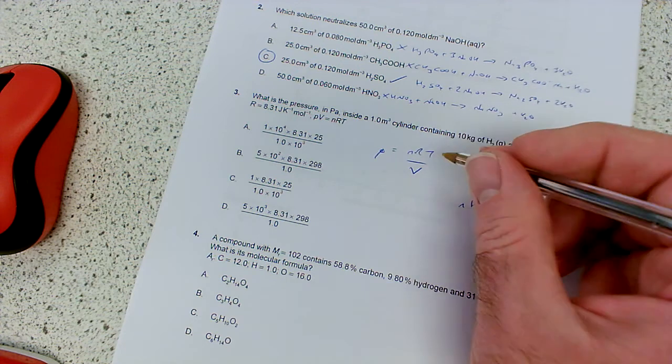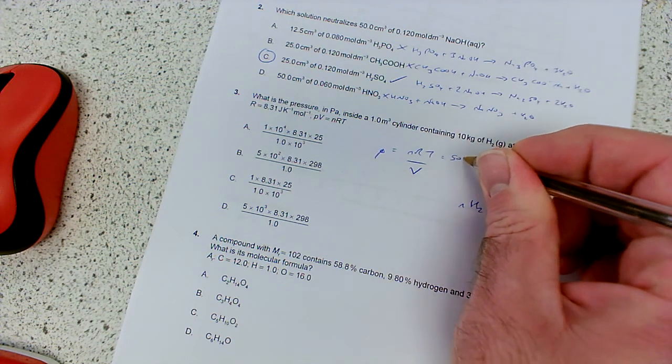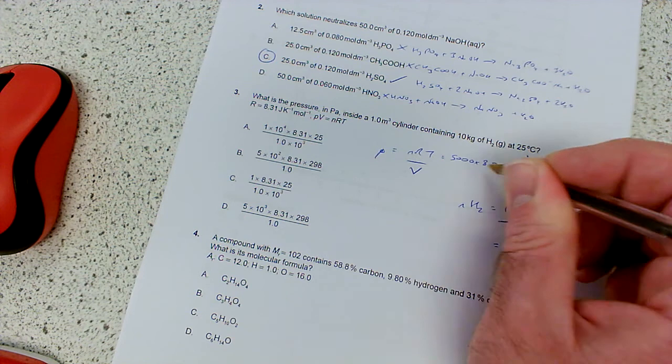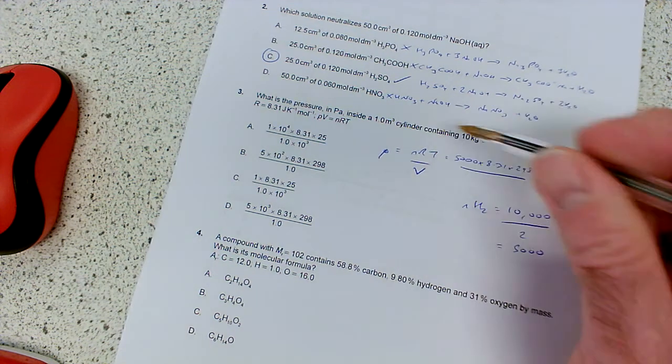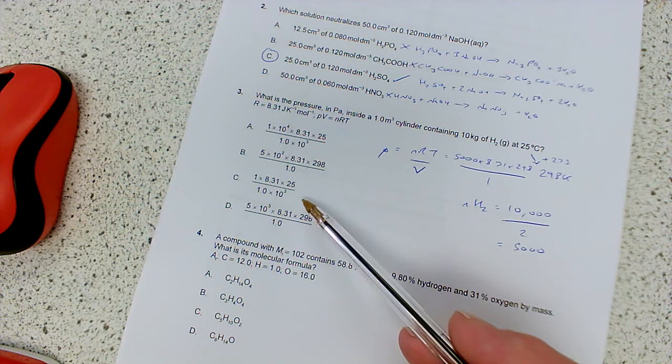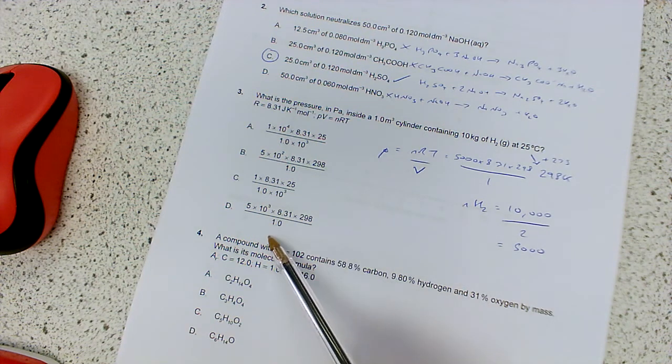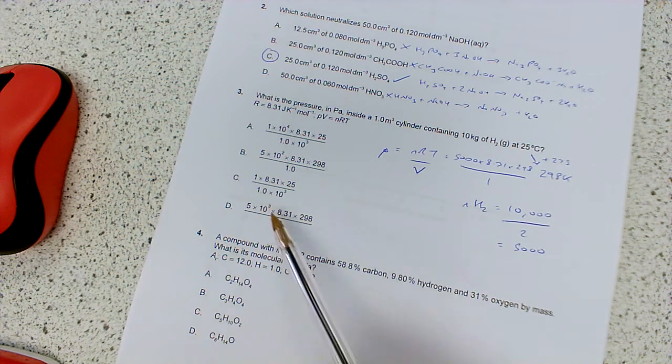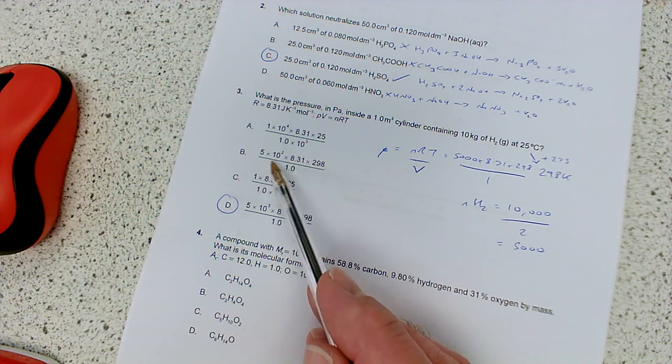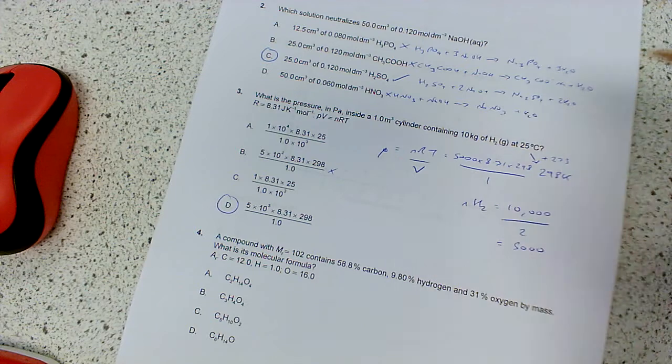So we've got 5,000 times 8.31 times 298, and that's going to be divided by the volume in metres cubed, which is 1. So which is the best match for that one? Well, it looks like this one, where we've got 5 times 10 to the 3, which is the same as 1,000. So that's the one I want to be going with. Just to eliminate some of the rest of them, 5 times 10 to the 2, well that's not going to be enough. That would only be 500, so it's not that one.